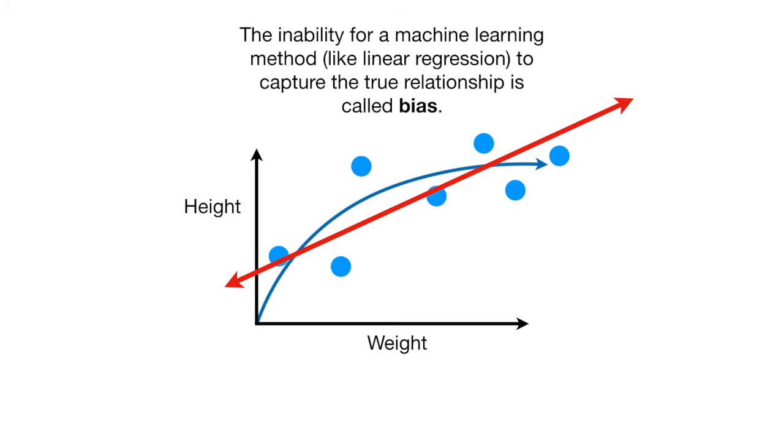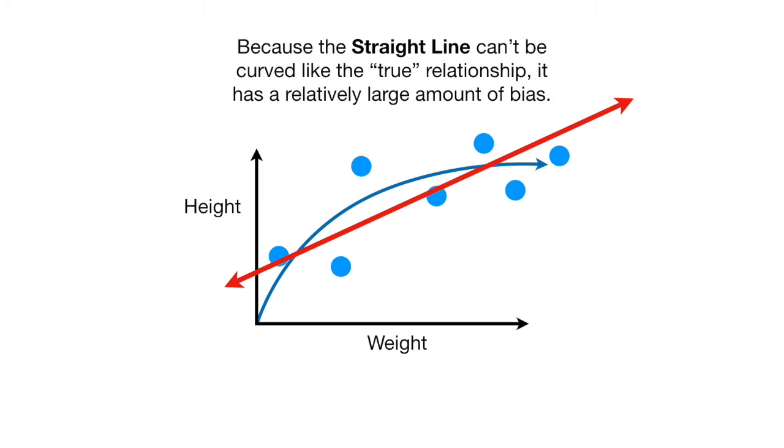The inability for a machine learning method, like linear regression, to capture the true relationship is called bias. Because the straight line can't be curved like the true relationship, it has a relatively large amount of bias.